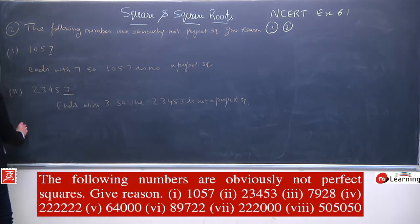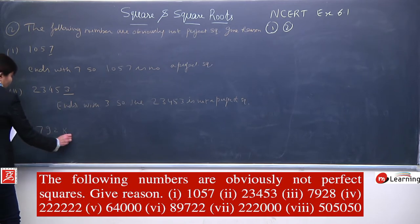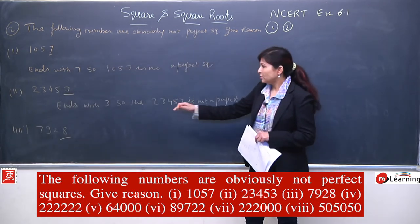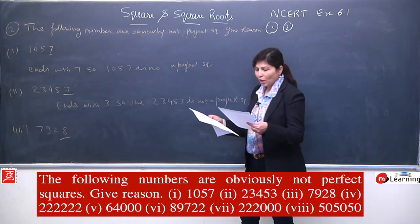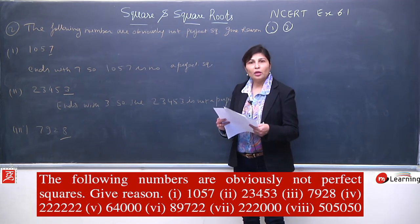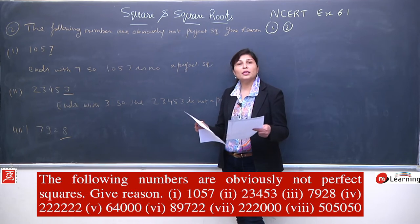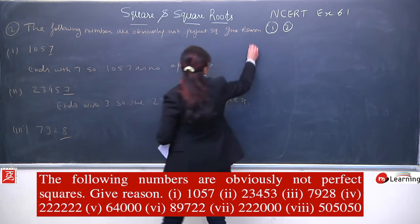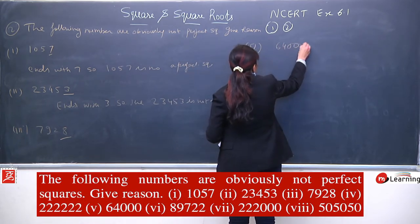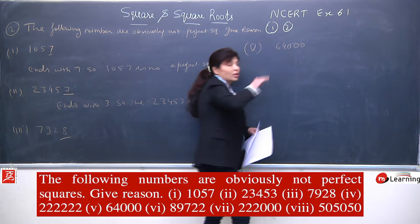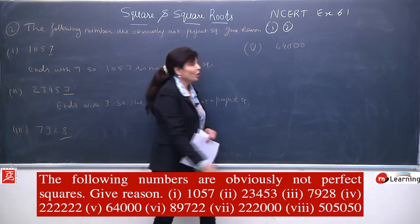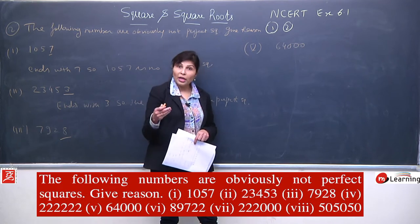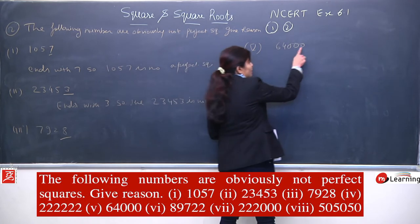Fourth number ends with 2, so reason: number is ending with 2, so it is not a perfect square. Fifth number is 64000 — it may seem possible, but we count the zeros: 1, 2, 3 — number of zeros is 3, which is an odd number. Since the number of zeros is odd, it is not a perfect square. If the question had been 64100, that would definitely be a perfect square, because the number of zeros would be even.